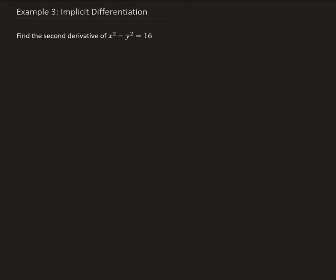In this example we want to find the second derivative of x squared minus y squared equals 16. First we need to find the first derivative, and then once we have that we can find the second derivative. We're going to use implicit differentiation here.